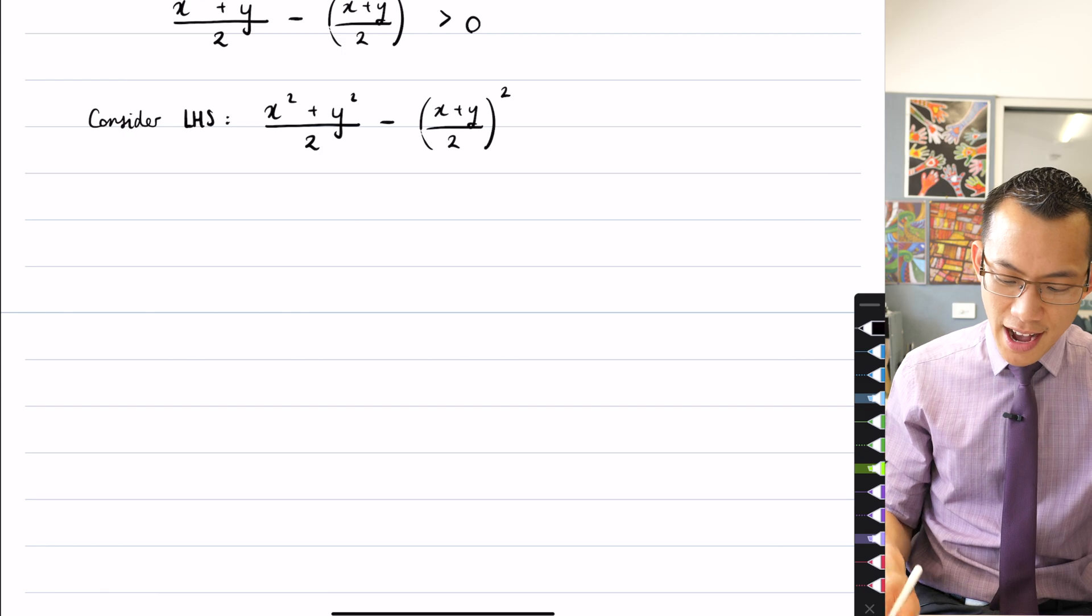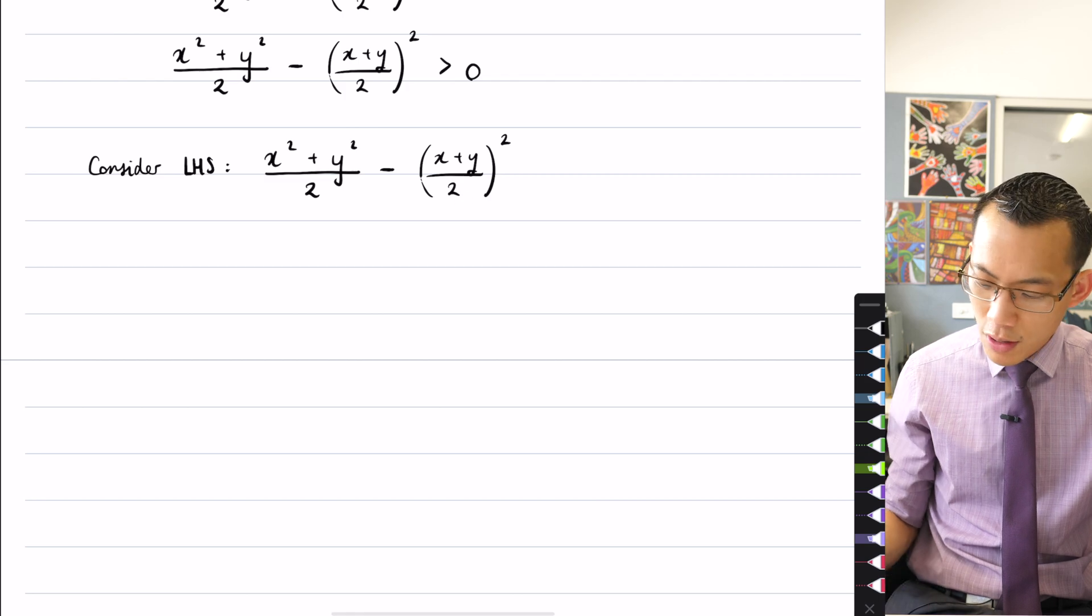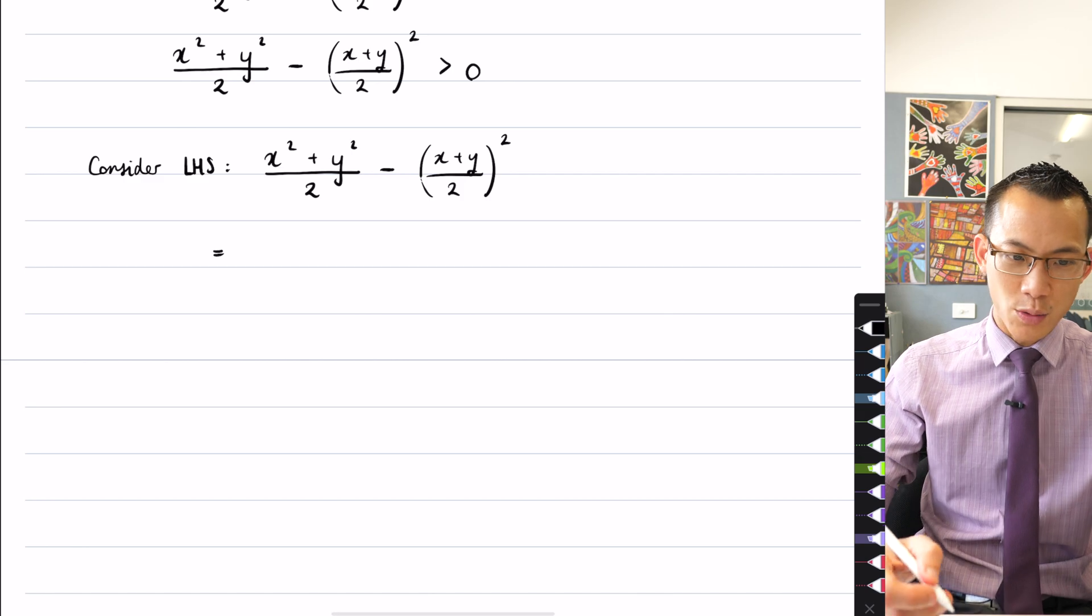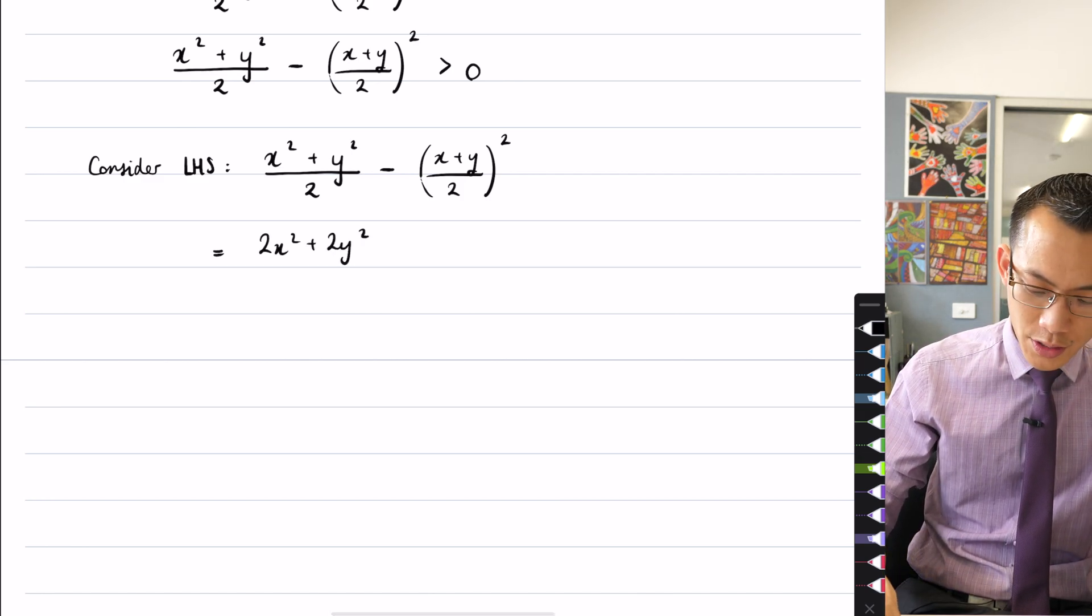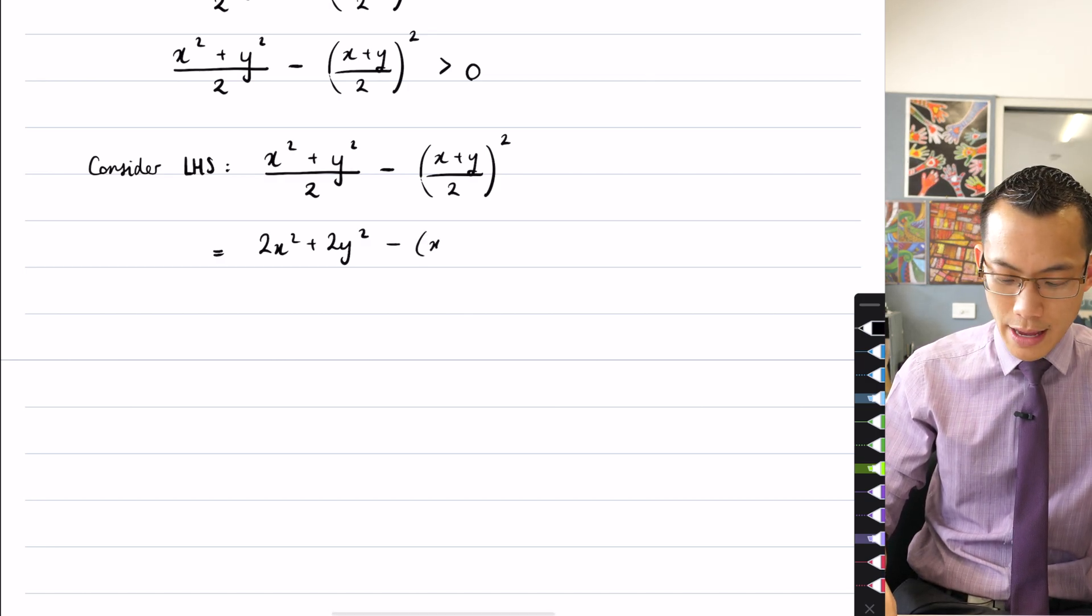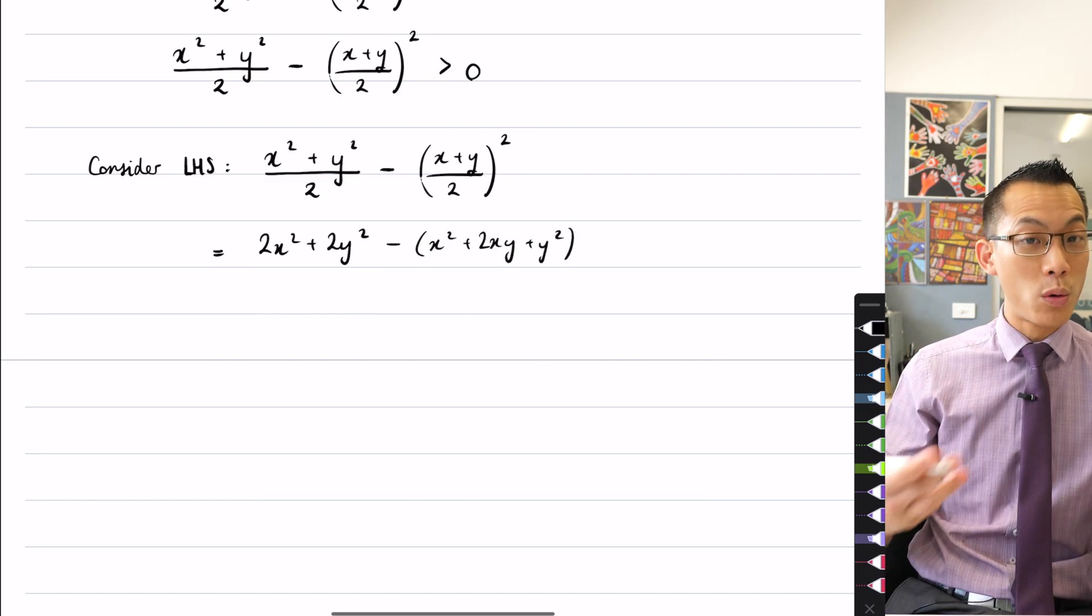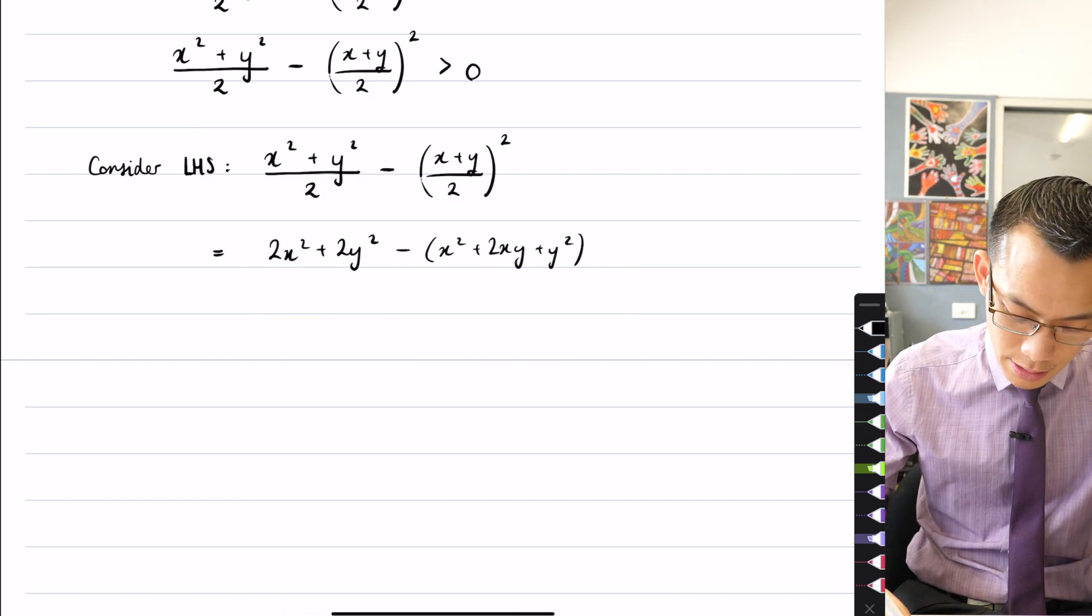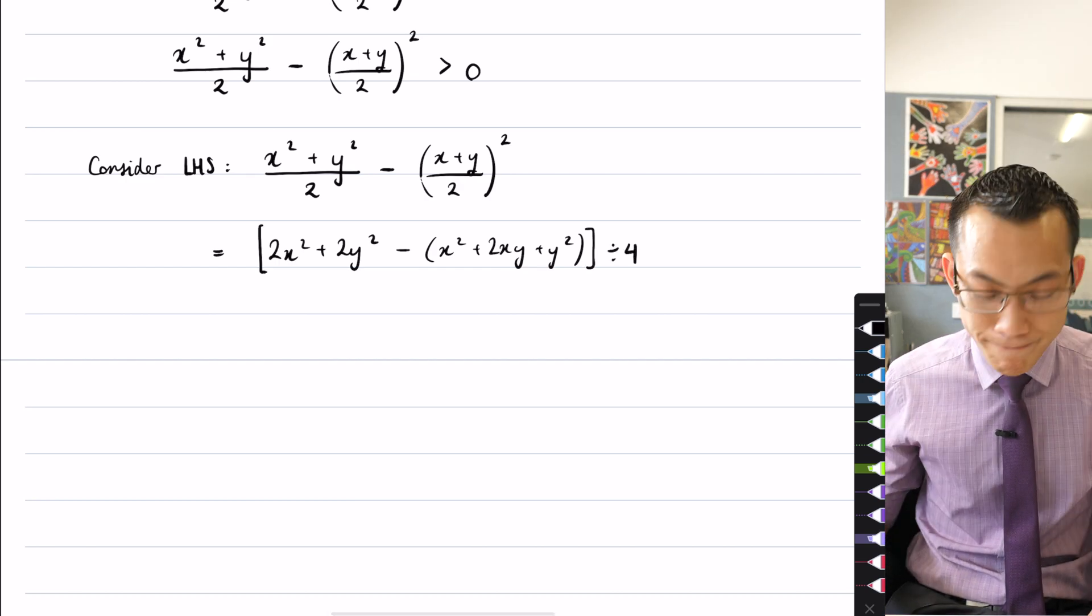You can see here this right-hand fraction, it's going to be sort of x plus y all squared on 4, so I might as well sort of work towards getting common denominators. So this is going to be equal to 2x squared plus 2y squared, take away, and then here comes the x plus y all squared, it'll be x squared plus 2xy plus y squared, and all of that is being divided by 4. So in fact, rather than draw some big enormous fraction, I'm a bit lazy to do that, so I'm just going to say all of that divided by 4.